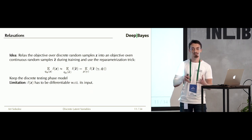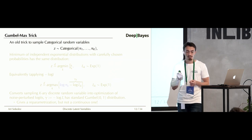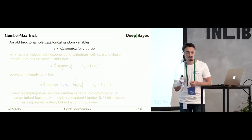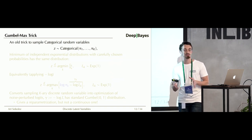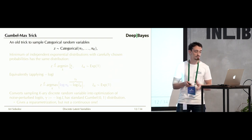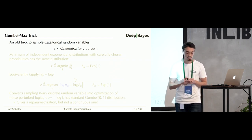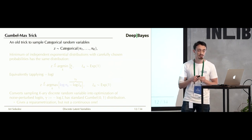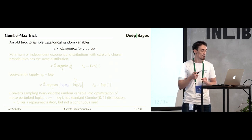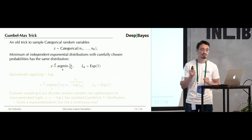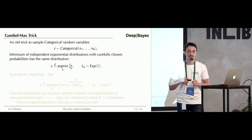The particular relaxation we'll discuss is called the Gumbel-Max trick — a very old trick from the graphical models community. Consider a categorical random variable Z with K different outcomes each with probability pi_1 to pi_K. It can be shown that this categorical random variable can be obtained through a simple optimization problem. Suppose you have K i.i.d. standard exponentially distributed random variables z_1 to z_K.